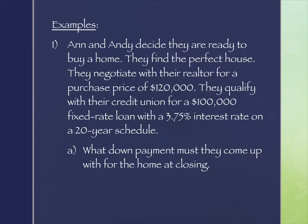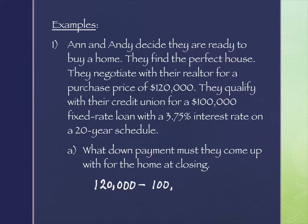Our first question is what their down payment is. The purchase price of the home was $120,000, and we subtract the amount they're actually borrowing — $100,000 — which gives us the down payment they need to bring to closing, plus whatever other closing costs they've negotiated. So the down payment is $20,000.